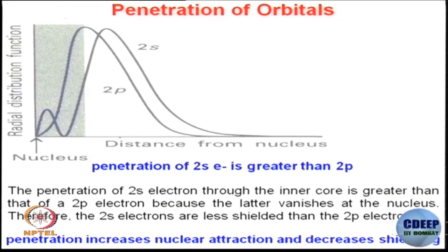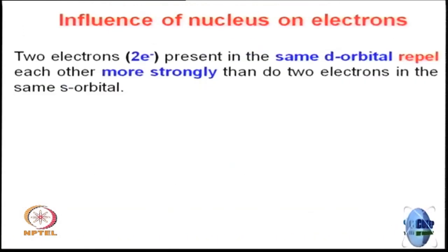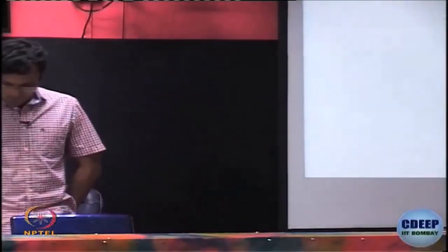The 2p electron vanishes at the nucleus, whereas 2s electrons are still there. Therefore, 2s electrons are less shielded than 2p electrons. 2s electrons are basically penetrating much more compared to 2p electrons. Now, another thing you really need to understand is that d electrons repel each other much more compared to p or s electrons.